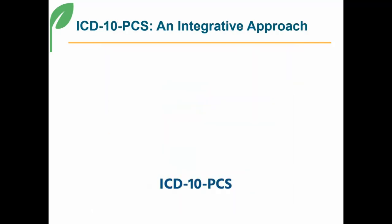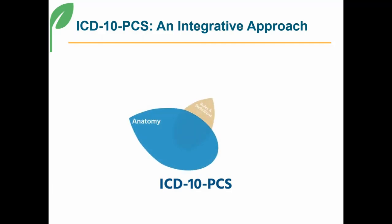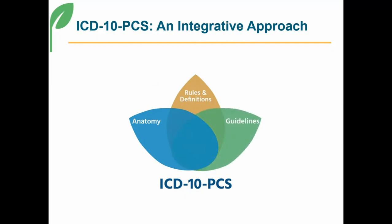There are six major aspects of ICD-10-PCS coding. These are anatomy, rules and definitions, guidelines, surgical knowledge, descriptive language, and finally — but maybe most importantly — logic.